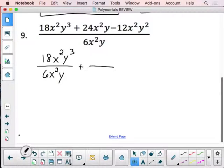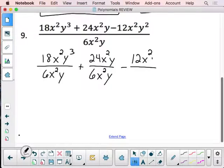Then you have the 24x squared y being divided by 6x squared y. And then you have the minus 12x squared y squared, and it is also being divided by 6x squared y.